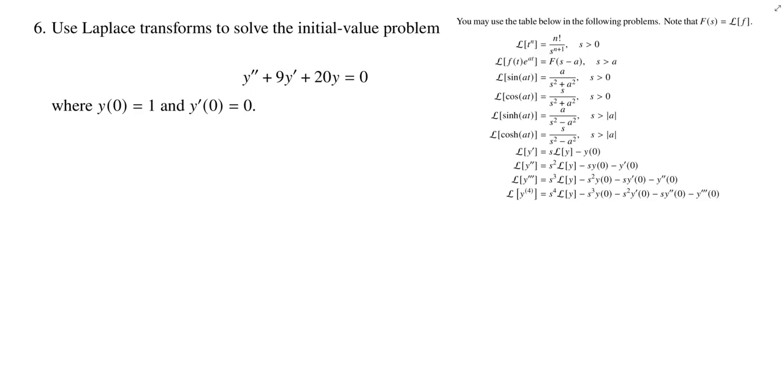So we're given an initial value problem here. It's a second order differential equation. Y double prime plus 9y prime plus 20y equals zero. And we're given even some initial data, right? Y of 0 is 1 and y prime of 0 is 0. And the goal is to find a function y that satisfies this differential equation.